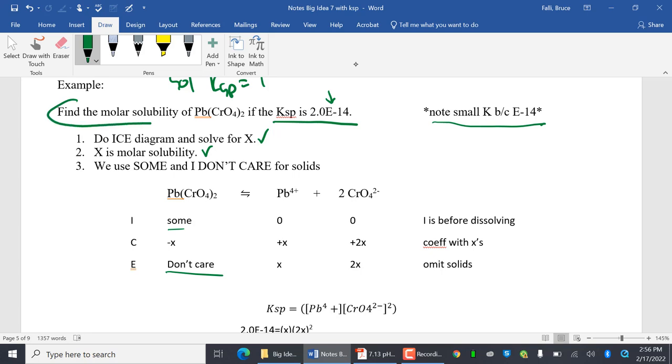This is what I have to write. First thing I do is write my dissolving equation. I'm going to do an ice diagram. Now it doesn't tell me anything. It just says the solubility of the KSP is 2 E negative 14. So what happens? I put some in. Yeah, I put some in. And this is the initial part. So before anything dissolves.